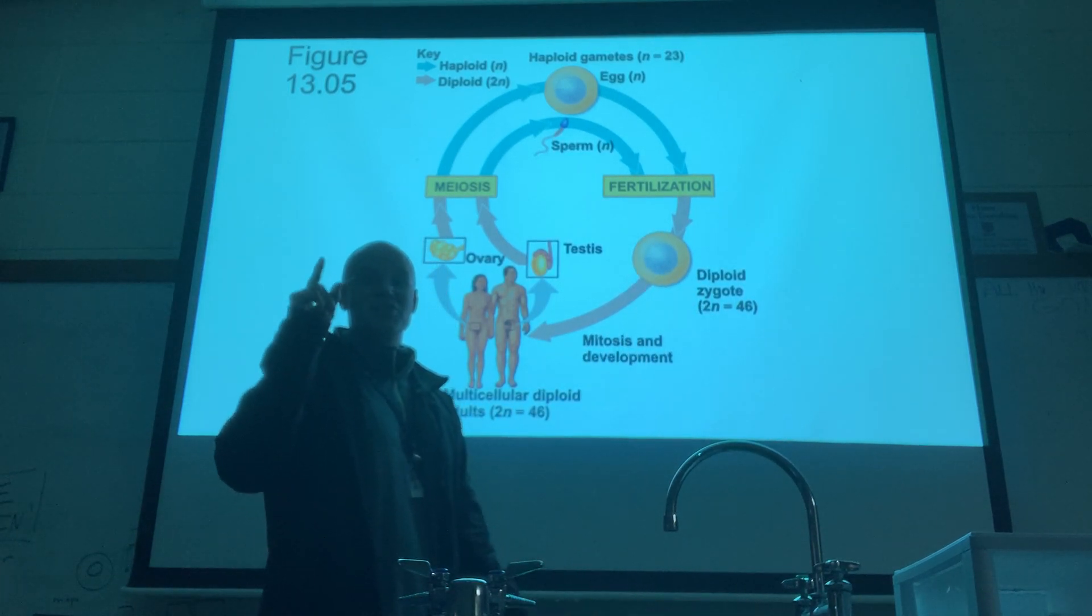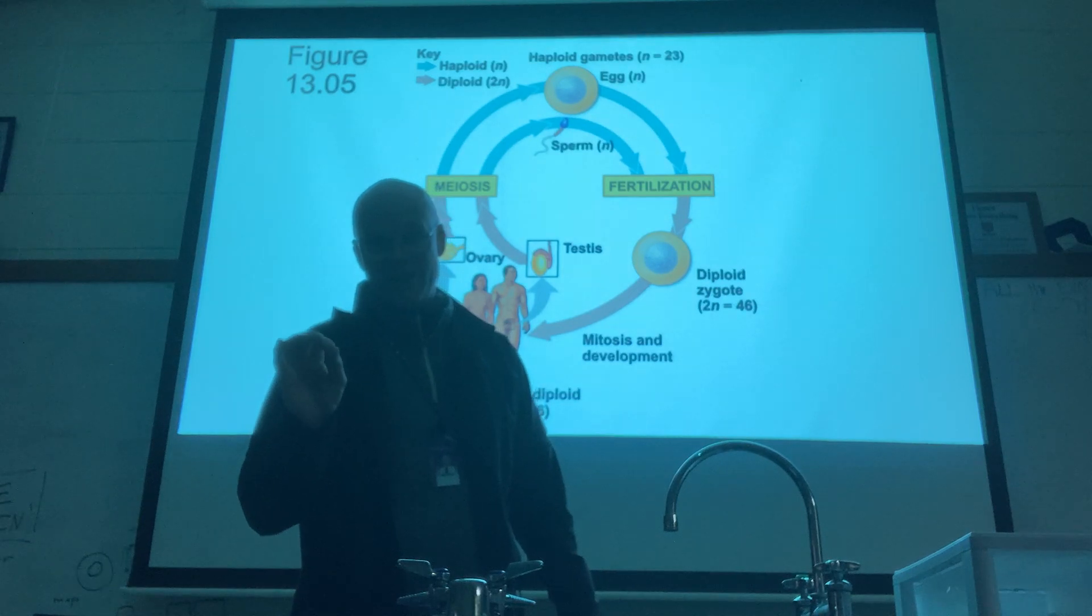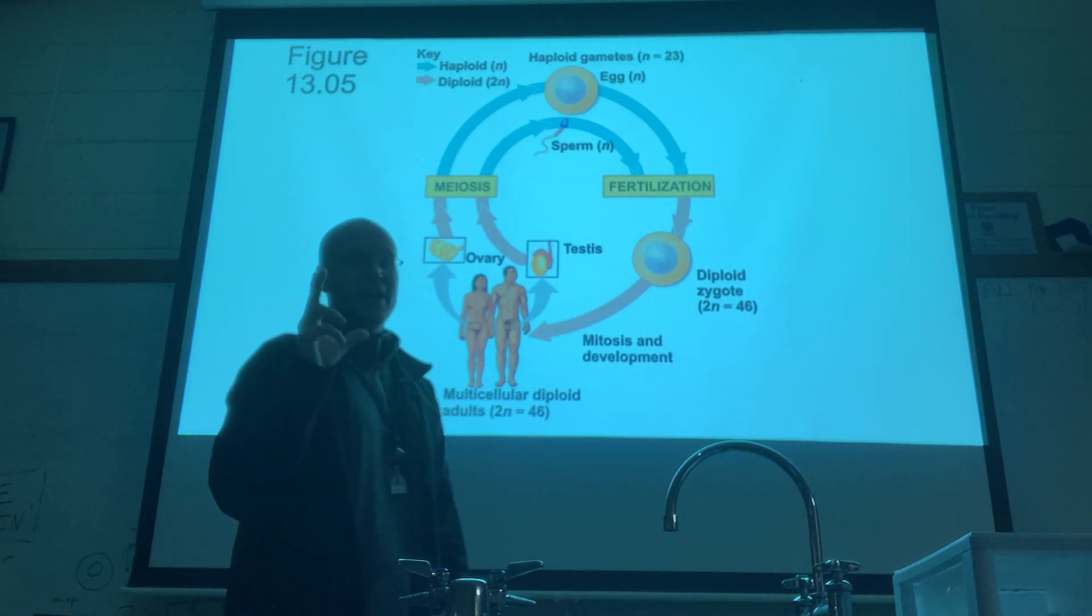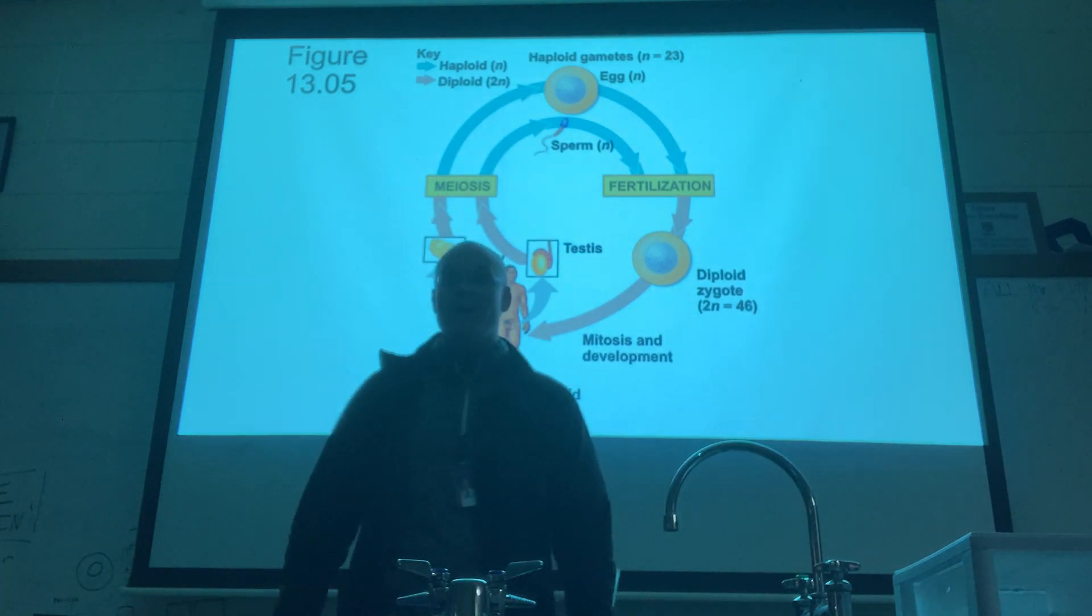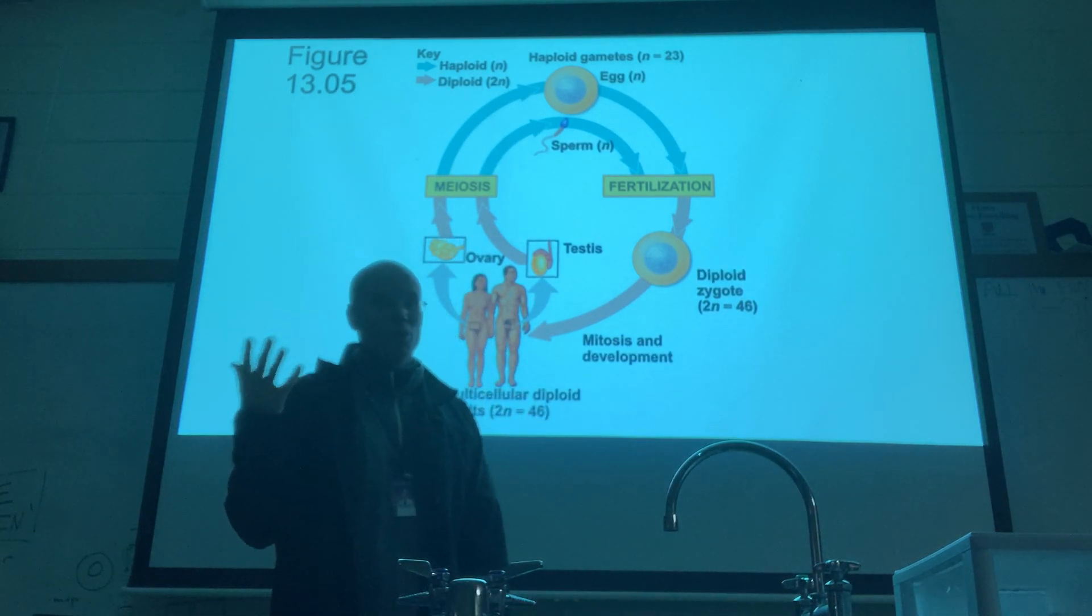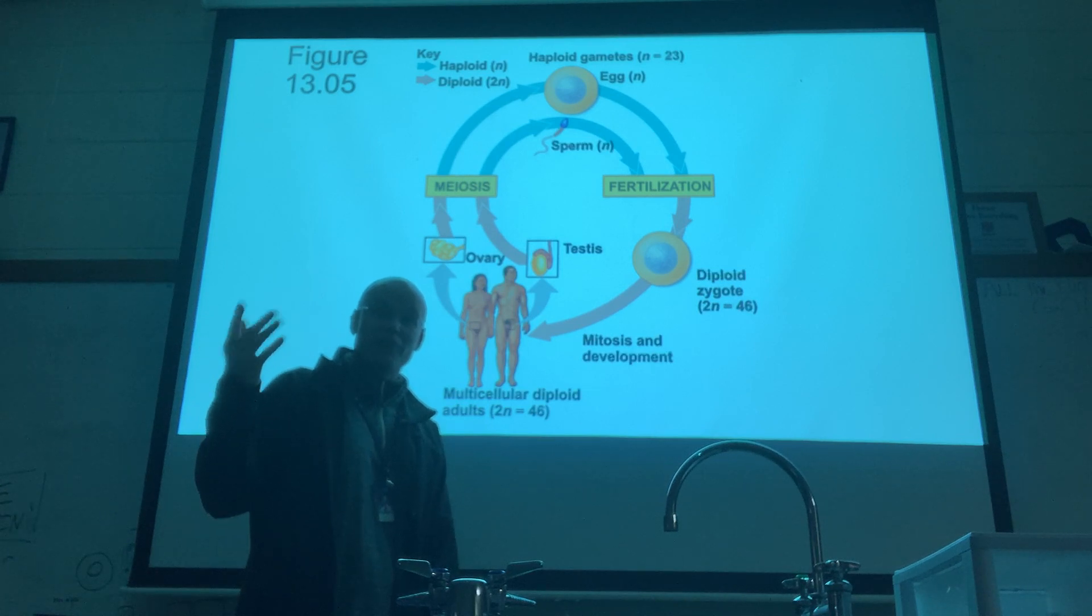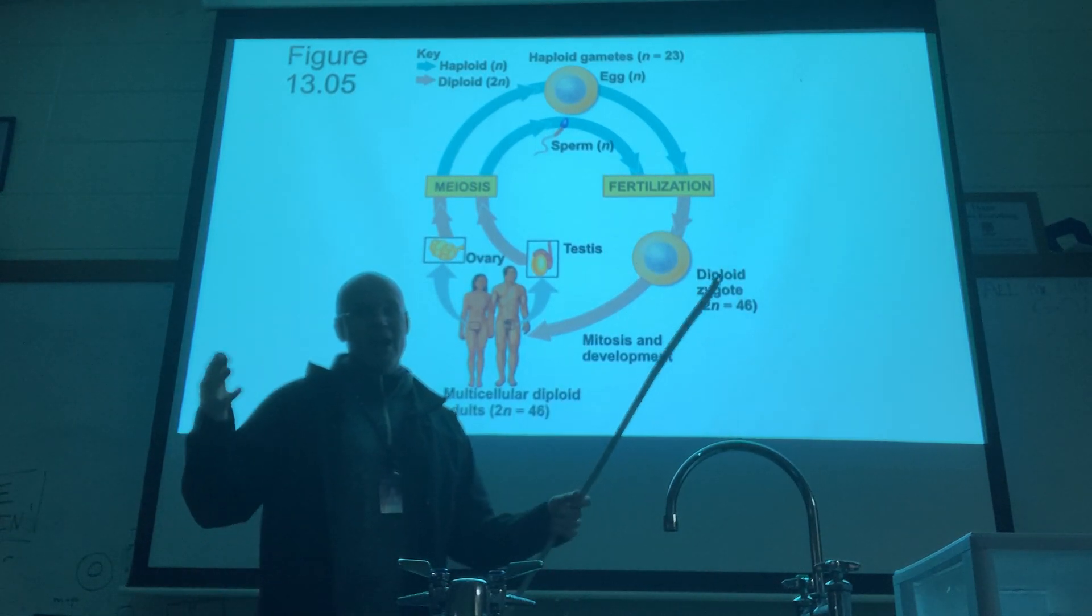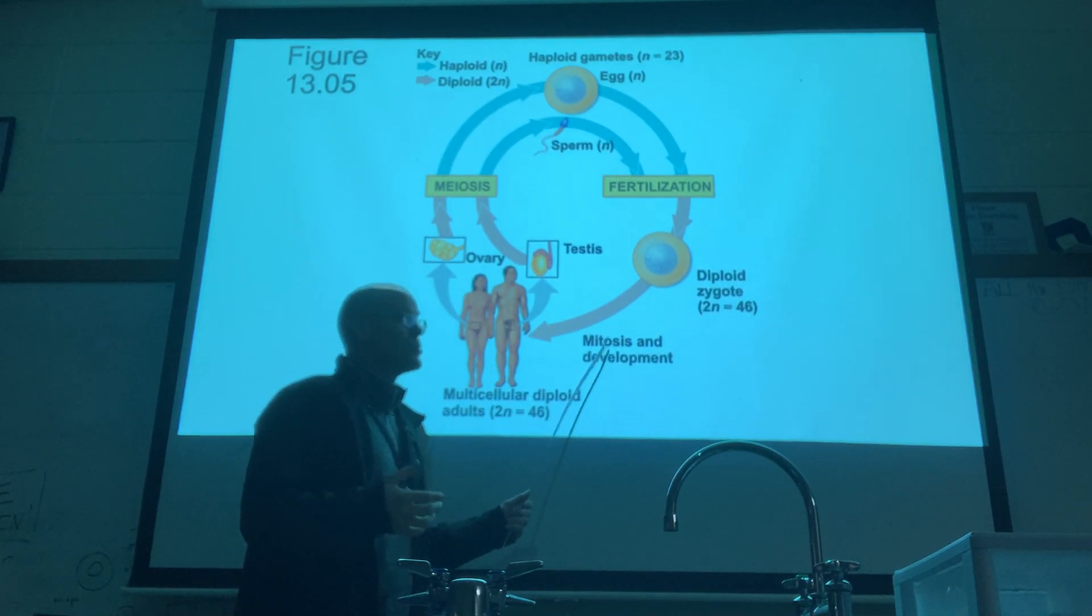A zygote is the single cell that all of you and me and everyone else once was. You once were a single cell called a zygote. One single cell that looked just like the cheek cells that we looked at in the microscopes back last semester. How did you get from that single cell to a human, eventually a full grown male or female? The answer is through mitosis.